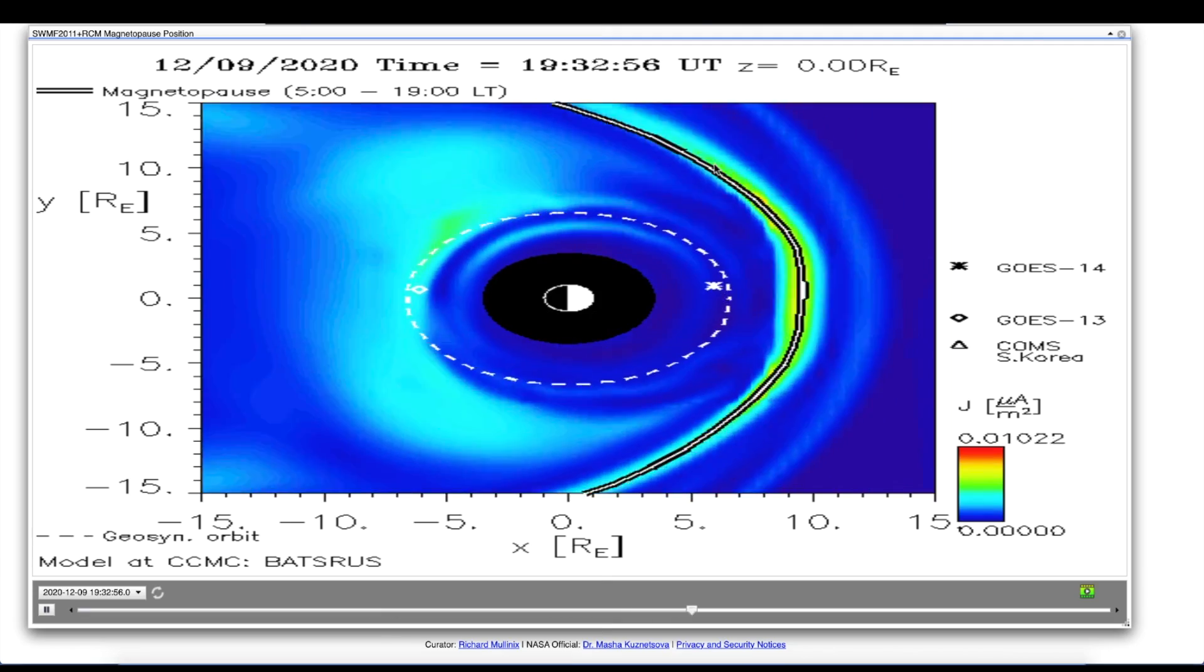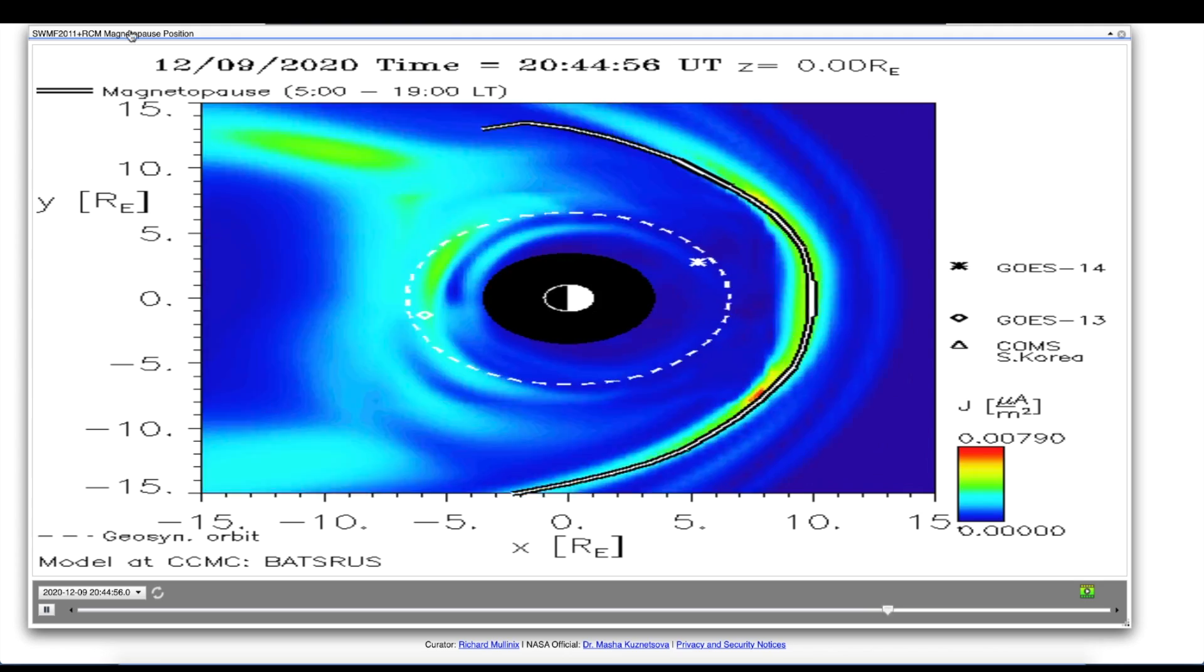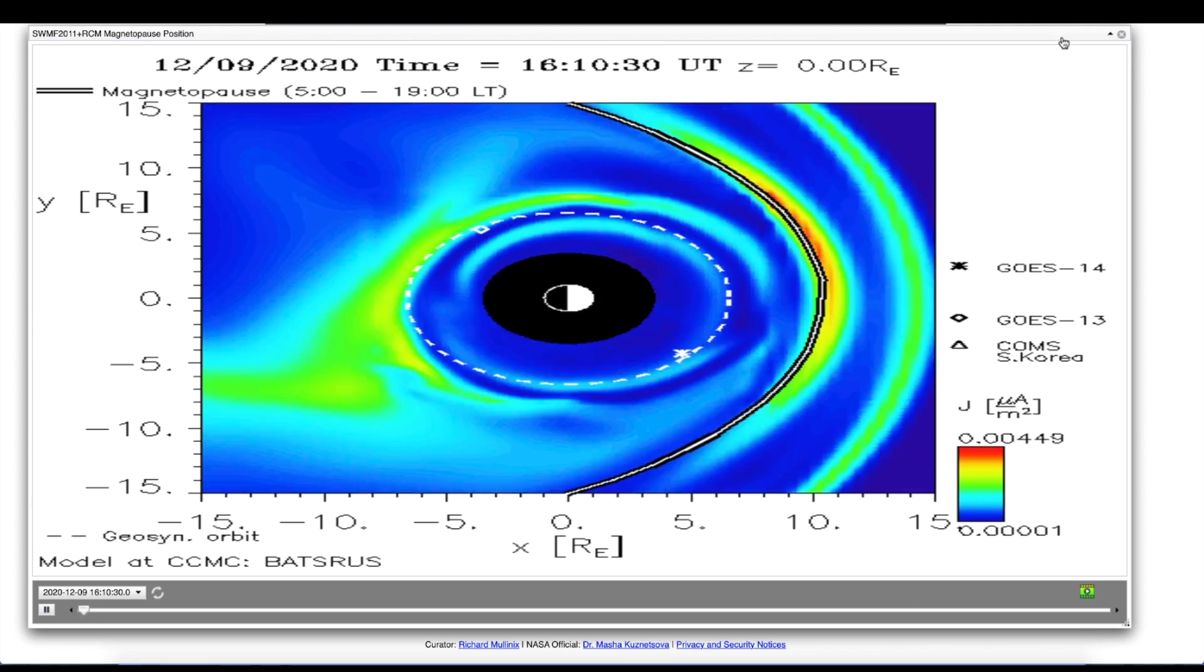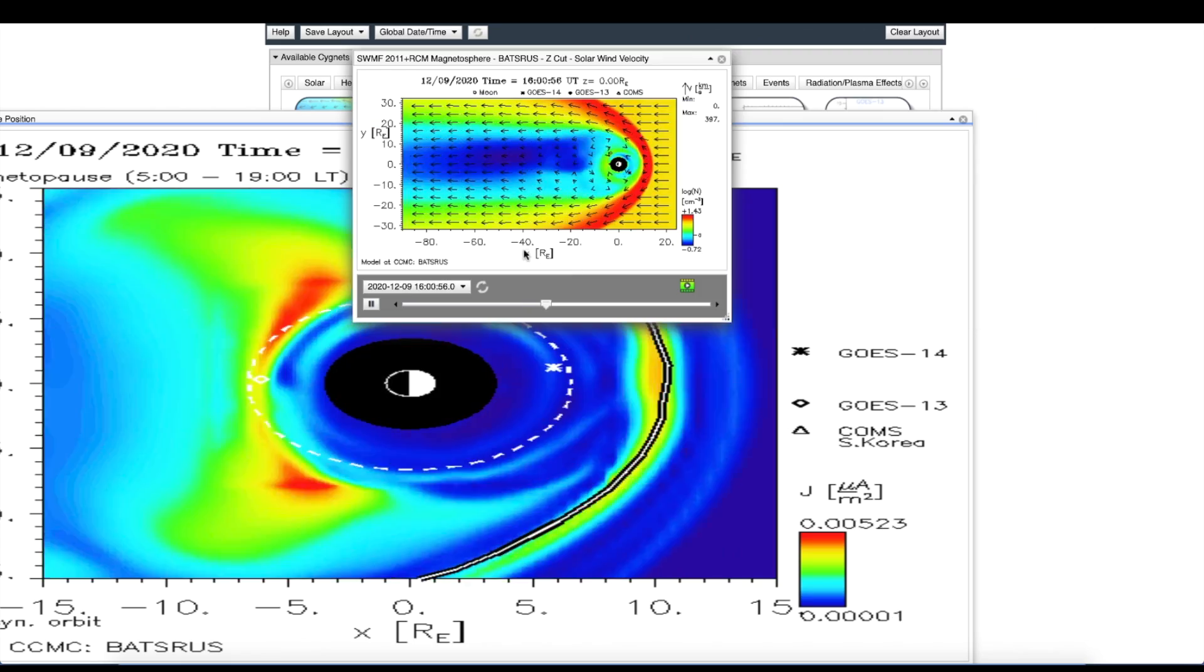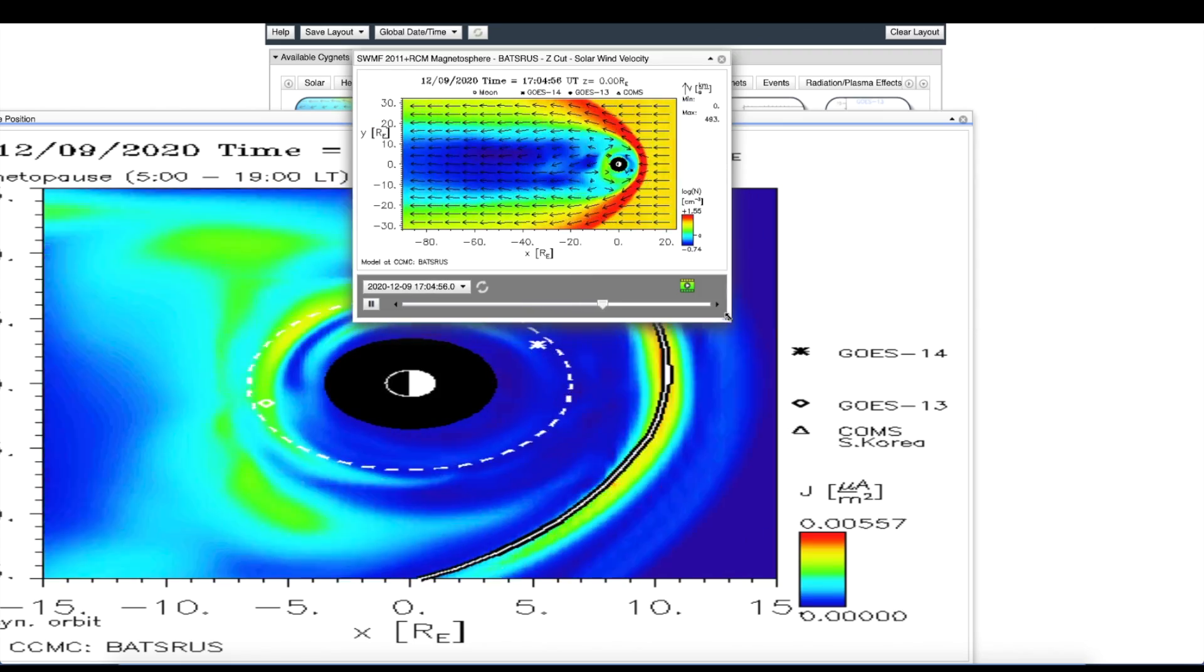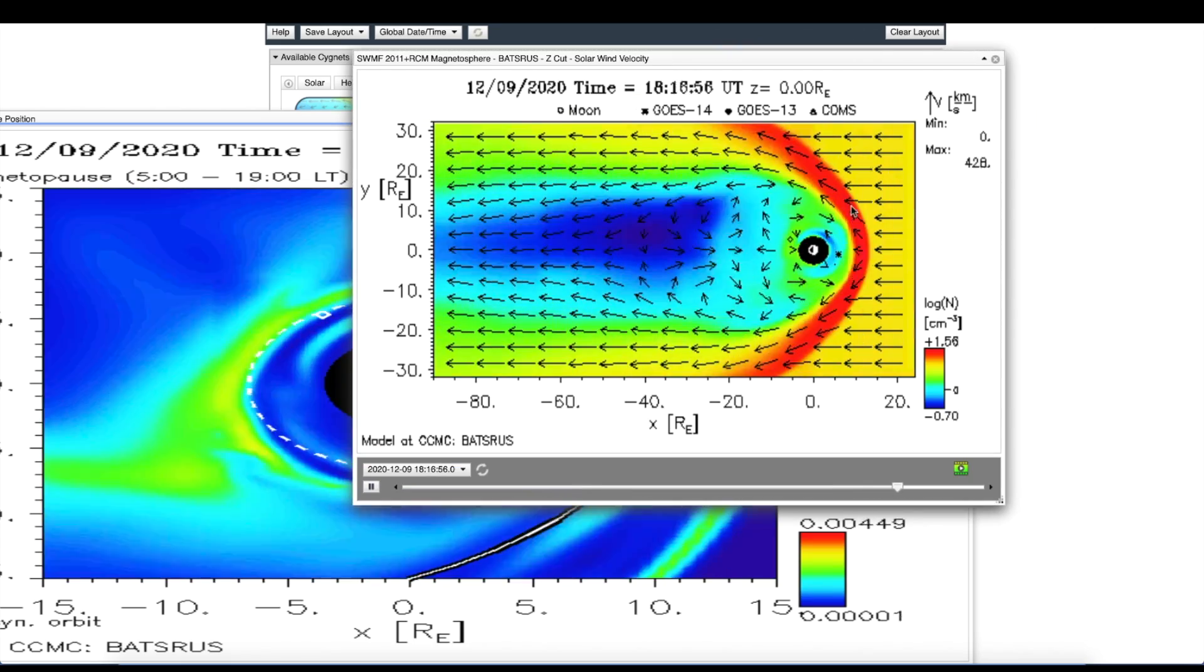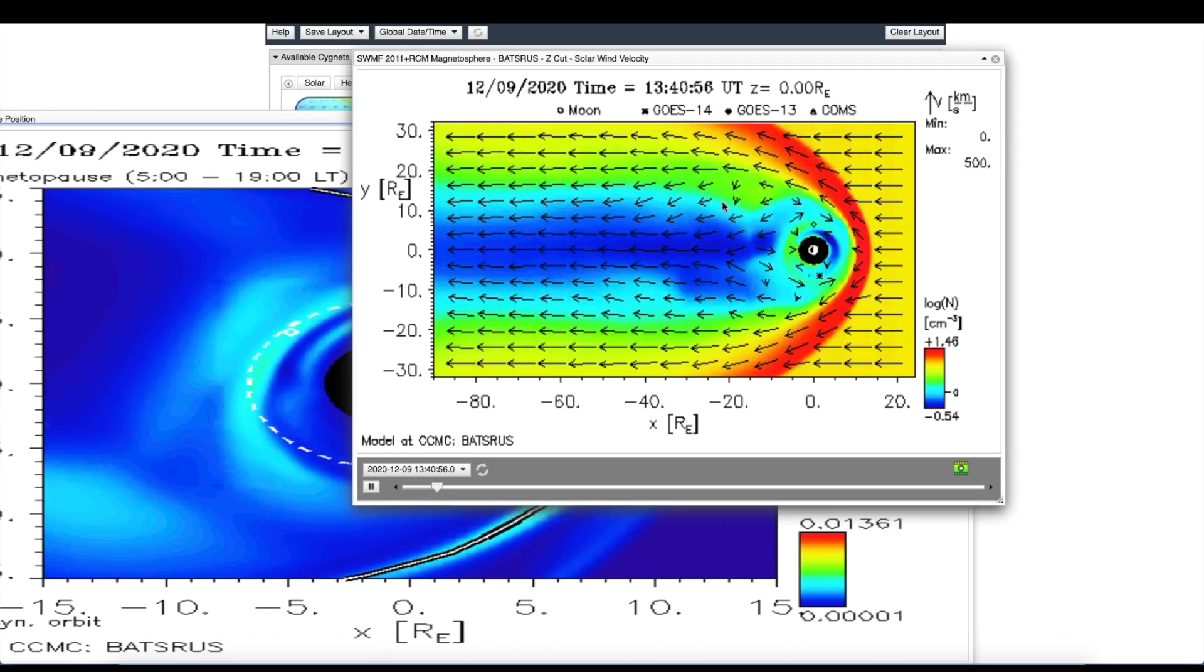It will create what's called a compression event, and it just pushes down on the magnetic shields. The shields are doing what they're supposed to do—they're going to react to the solar activity, and that's not necessarily a bad thing.